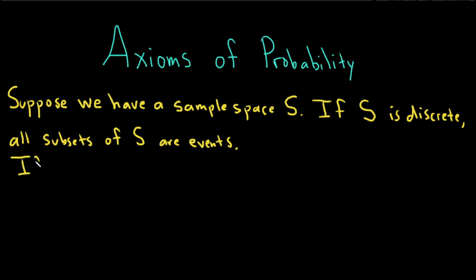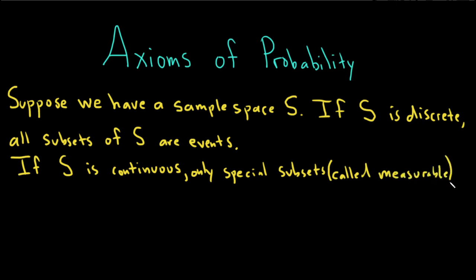If S is continuous, it's a little bit different. Only special subsets, and those subsets by the way are called measurable, correspond to events.